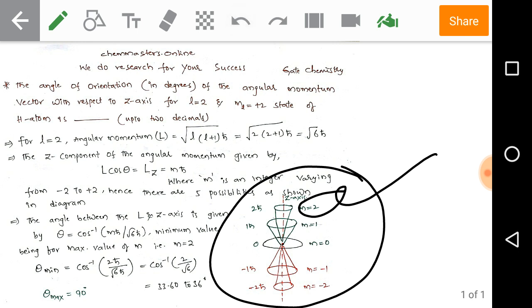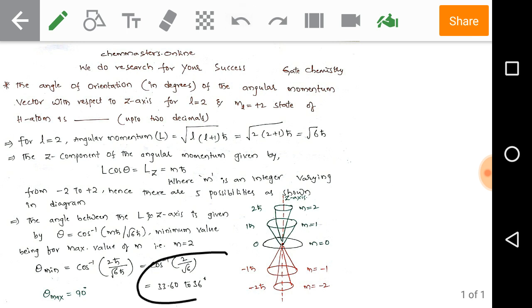By that we get cos inverse of 2 divided by square root of 6, and that value is nearly 35.26 degrees we can obtain.